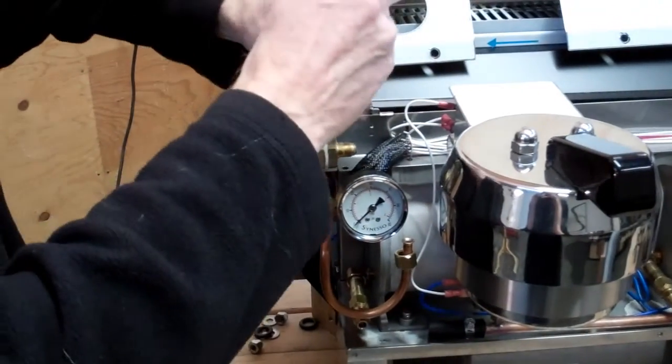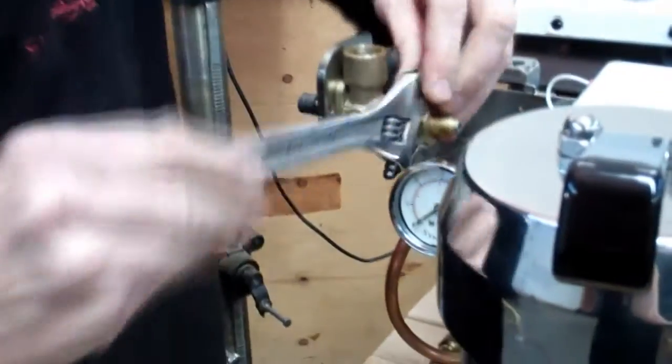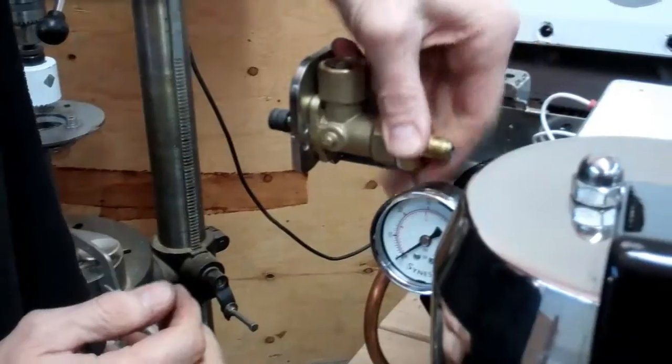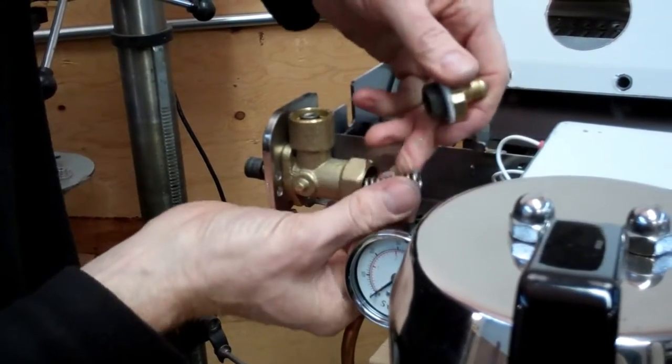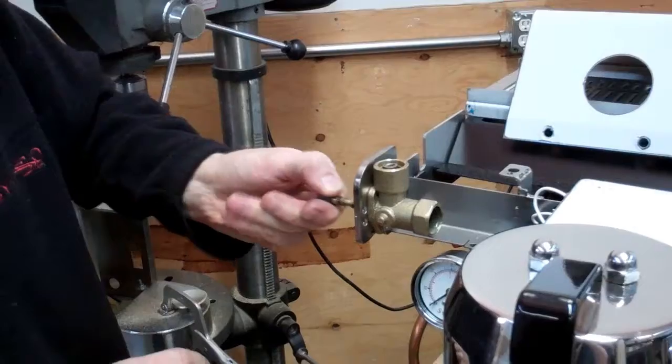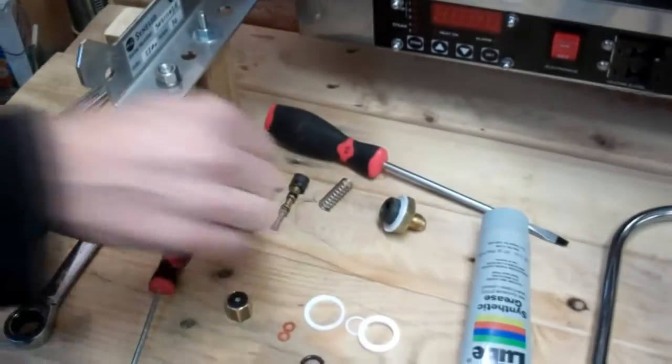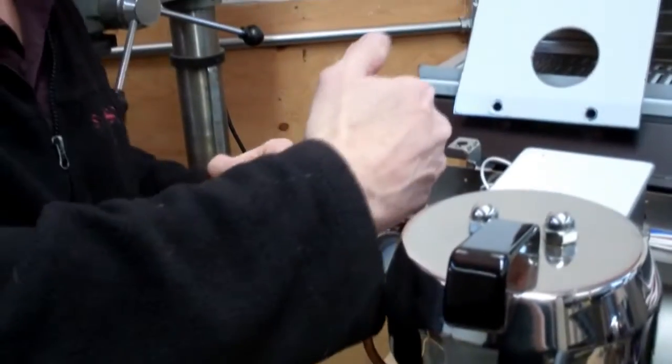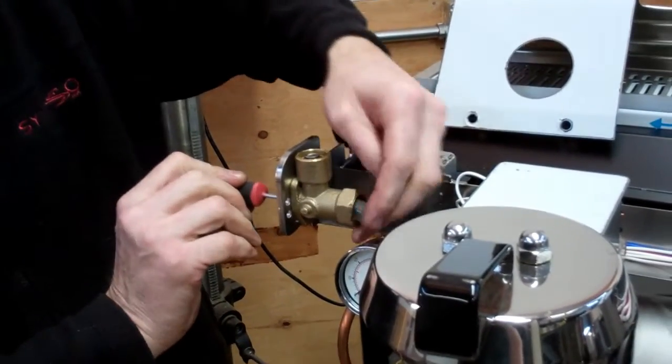The back of the steam valve then unscrews next. There's a spring inside. The stem pulls out this way with two O-rings on it. And internally, there's a seal. This is our seal to be replaced by the new one.